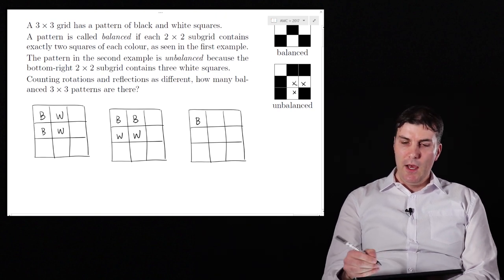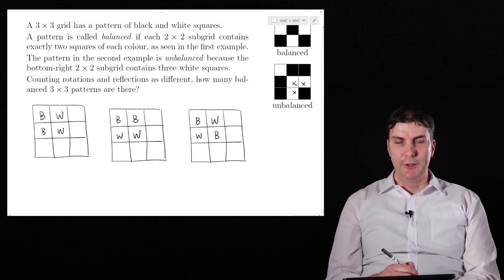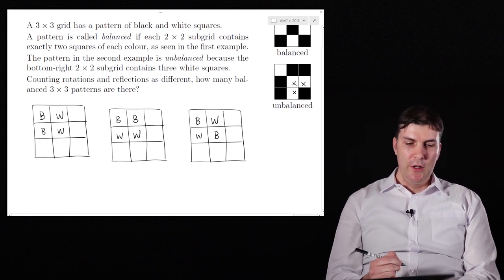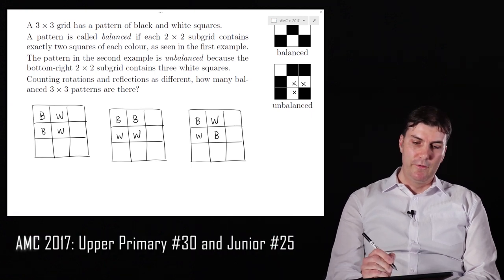Or we could do the regular chessboard thing and go down the diagonals with blacks and whites like so. But you might notice now that the second example is actually just a reflection of the first.